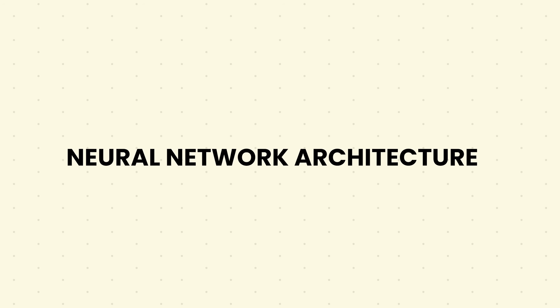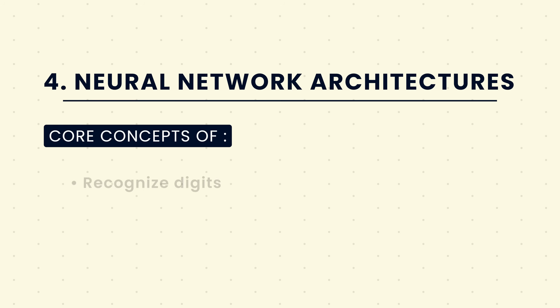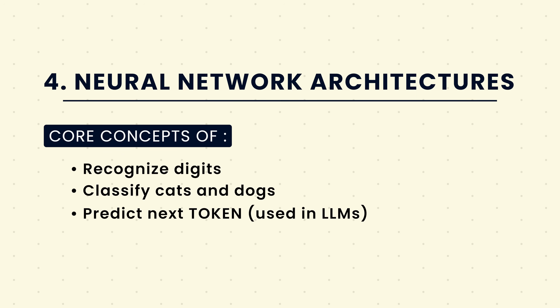For those who enjoy math, diving into the calculations behind these processes can be very rewarding. Despite their simplicity, neural networks have revolutionized AI, transforming fields like image recognition and natural language processing. When you stack many neural network layers together into a complex architecture, the network can start recognizing digits, classifying cats and dogs, and even predicting the next token — which is the case with LLMs today. Nowadays, transformers outperform pretty much all earlier architectures, so you might want to jump into transformers right away and reverse engineer the knowledge from there.